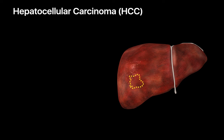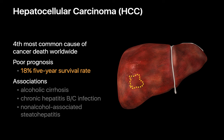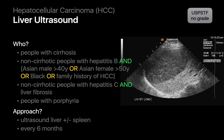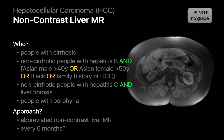Hepatocellular carcinoma, or HCC, is the fourth leading cause of cancer death worldwide and associated with a five-year survival rate of only 18%. Alcoholic cirrhosis, chronic hepatitis infection, and NASH are known risk factors. The use of semi-annual ultrasound has been proposed for HCC screening in people with known risk factors for HCC, as has the use of abbreviated non-contrast liver MRI. With both tests, how the benefits of image-based screening compare to potential harms from the workup of false positives remains unclear, and the USPSTF has issued no statement regarding either modality.